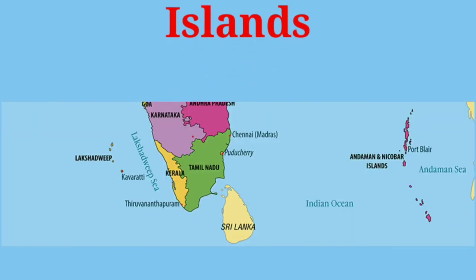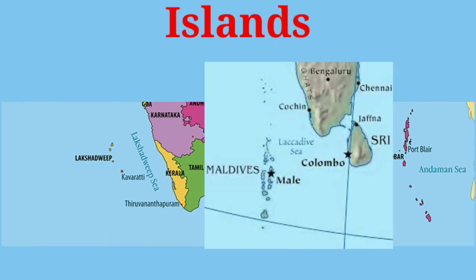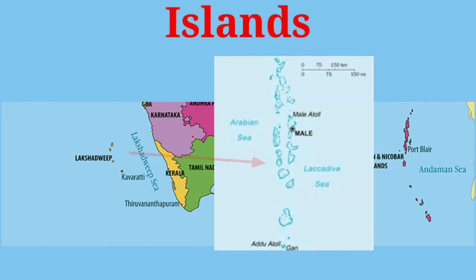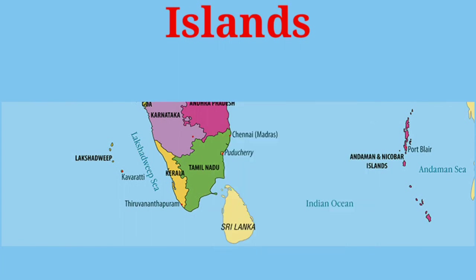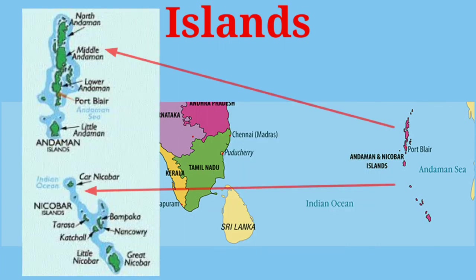The two major groups of islands in India are the Lakshadweep Islands and the Andaman and Nicobar Islands.